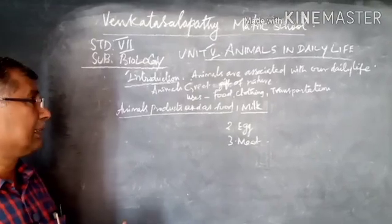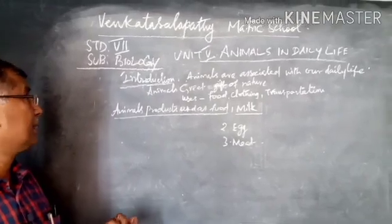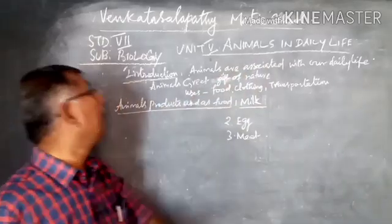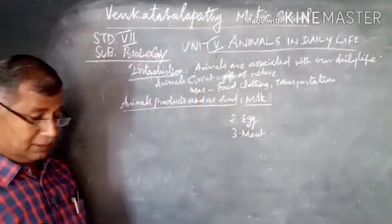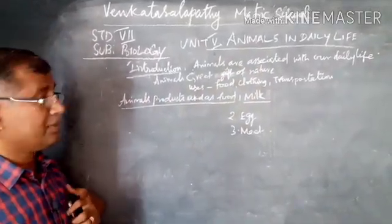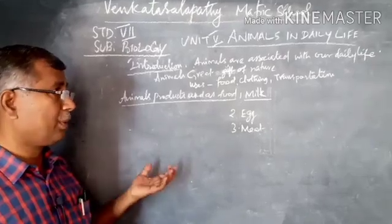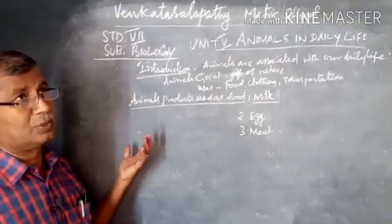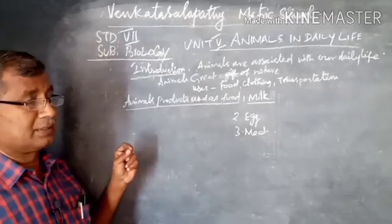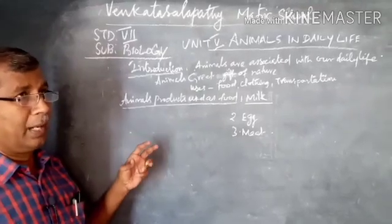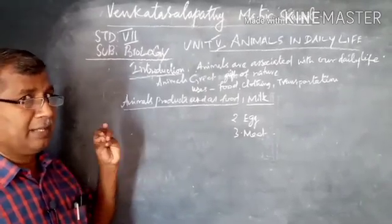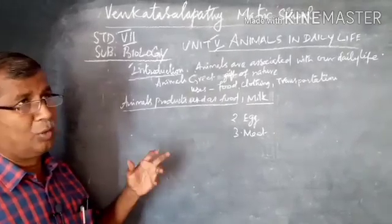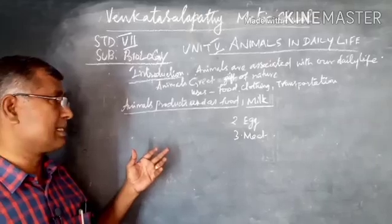Today we are going to see about the third term portions in biology. We need to study animals in daily life. In lower classes we have already studied how plants are useful to us — leaves as food, then bulb and stem. Each and every part of the plant is used as food for human beings and also for cattle.